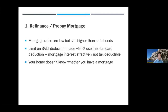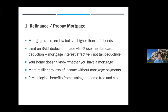Also, the law since 2018 capped the amount of mortgage that counts toward the mortgage interest deduction. So especially in California with expensive homes, the extra mortgage you're carrying is not effectively tax deductible. I hear people say they don't want to pay down their mortgage because they don't want to put more money into the home — but that ship sailed a long time ago. Your home doesn't know whether you have a mortgage; its value goes up or down based on home values, not on how much you owe.